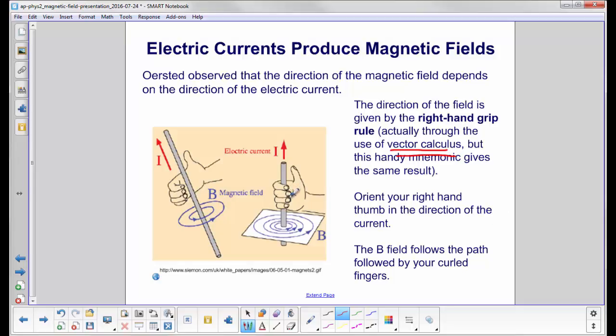You could also do it this way. Well, actually, this is just another view. You grab around the wire, thumb goes in the direction of the current, and see how these magnetic field lines are going in that direction, following the directions of your fingers.